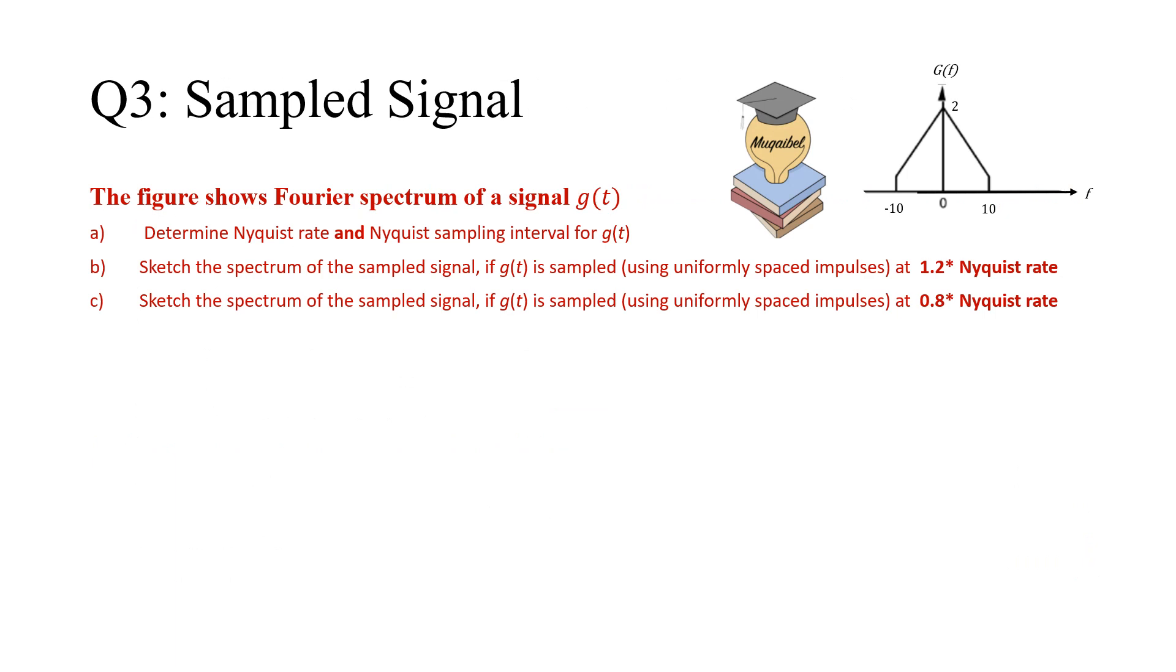The third question requires some time. So, the figure shows the Fourier spectrum of a signal G of T. The spectrum is shown here. Amplitude and the maximum frequency. Determine the Nyquist rate and Nyquist sampling interval for G of T. What is the Nyquist rate and Nyquist interval? You can pause the video now.